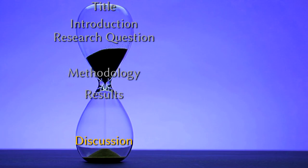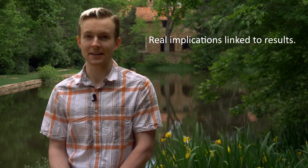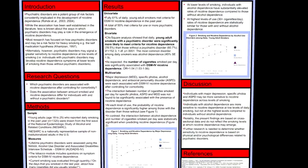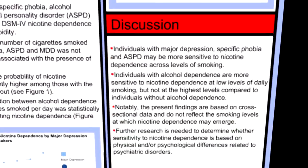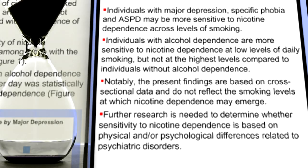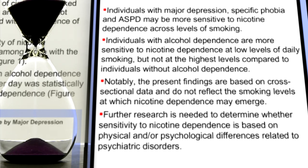The final section of your presentation is the discussion section. It's important that this section includes real implications linked to results and not merely a restatement of your research question. This is sometimes best written after you've had a few days to step away from your project and put your question and possible answers into context. In our example, we interpret the meaning of the results, the strengths of the study, limitations of our study, and recommendations for future research. If your findings have immediate implications, you should also include those. Remember, this is the bottom of the hourglass and should proceed from the more specific to the most general statements.